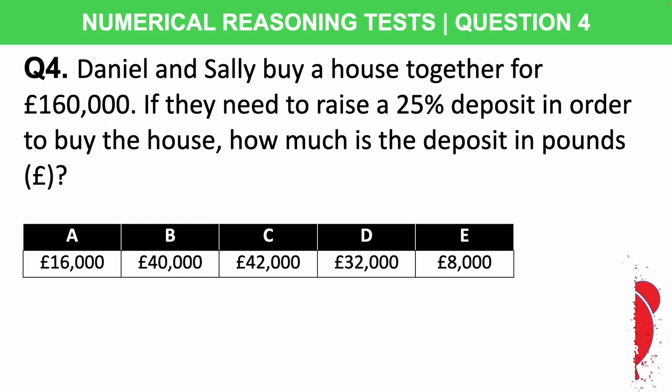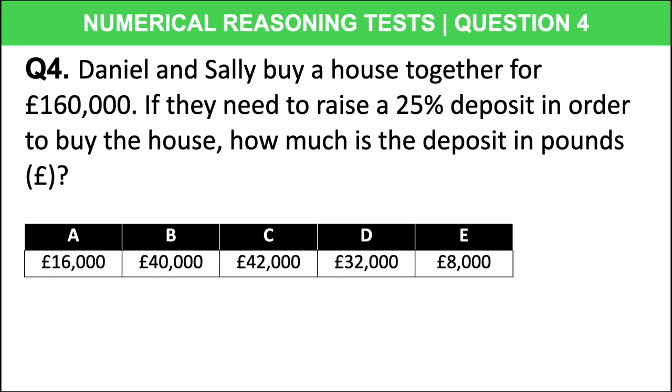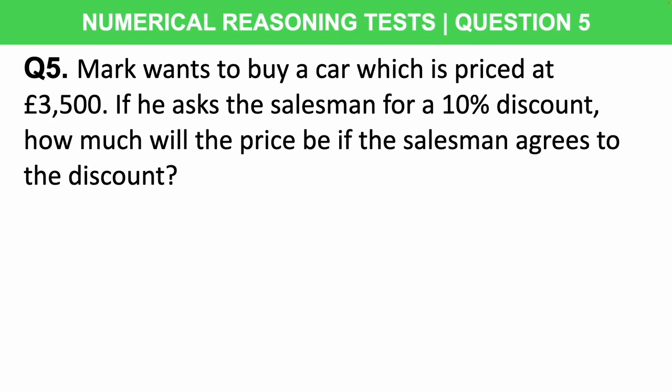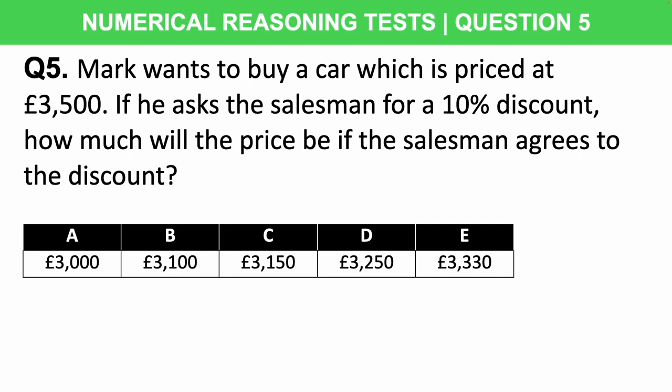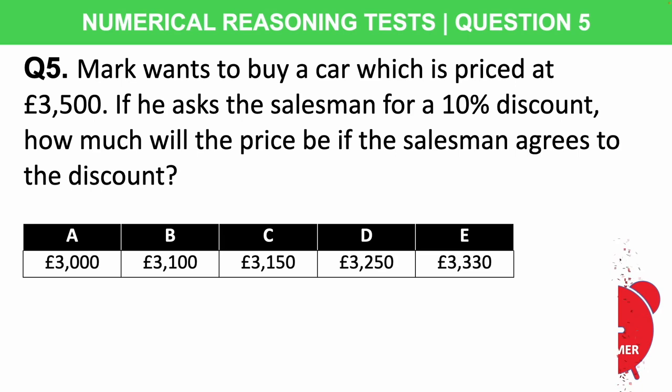Question 5: Mark wants to buy a car priced at £3,500. If he asks the salesman for a 10% discount, how much will the price be if the salesman agrees? Is it A, B, C, D, or E? You have 15 seconds on the timer. Don't forget to put your answer in the comments section below.